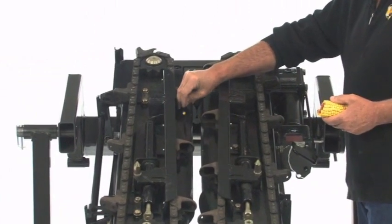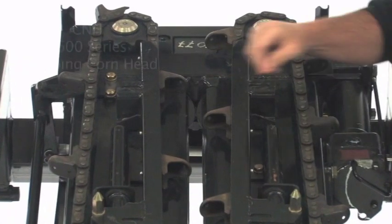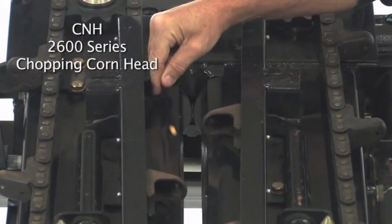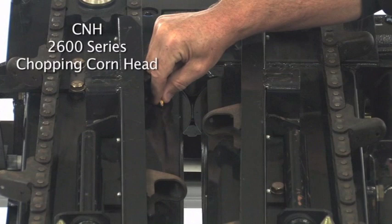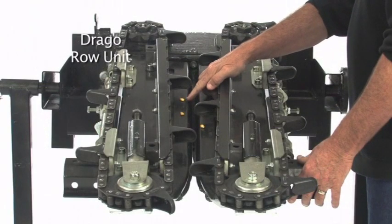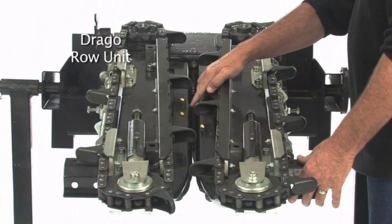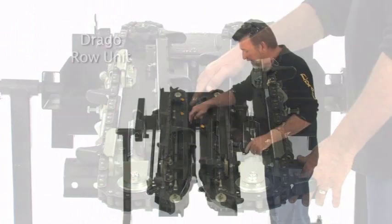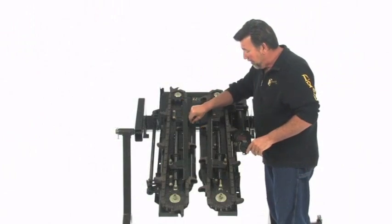You'll notice as I try to put a kernel of corn on the deck plate here, that the beveled edge that many people put on to reduce the amount of trash brought in by the row unit, the beveled edge versus the rounded edge on the Drago, the beveled edge actually creates a slope for that kernel to actually exit the row unit.